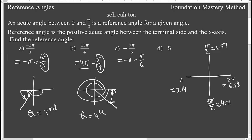Negative 7π/6 can be written as negative π minus π/6. Negative π goes here and then π/6 again — so my reference angle is this one. We can ignore the sign and just say π/6, and we are in the second quadrant.